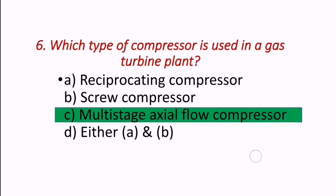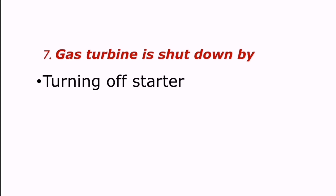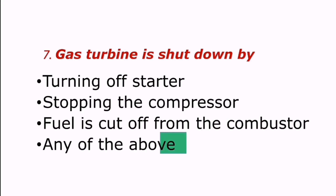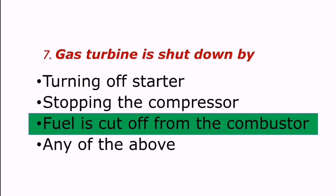Question: How is a gas turbine shut down? A gas turbine is shut down by cutting off fuel from the combustor.